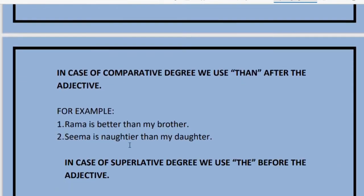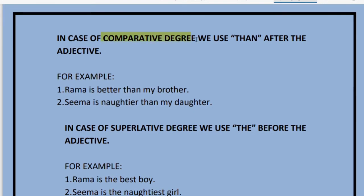In the comparative degree, it is very important to put 'than' after the adjective. For example, 'I am not as intelligent as my brother' is positive degree, but in comparative degree we say 'I am more intelligent than my brother.' 'More intelligent' is the comparative form, followed by the word 'than.'